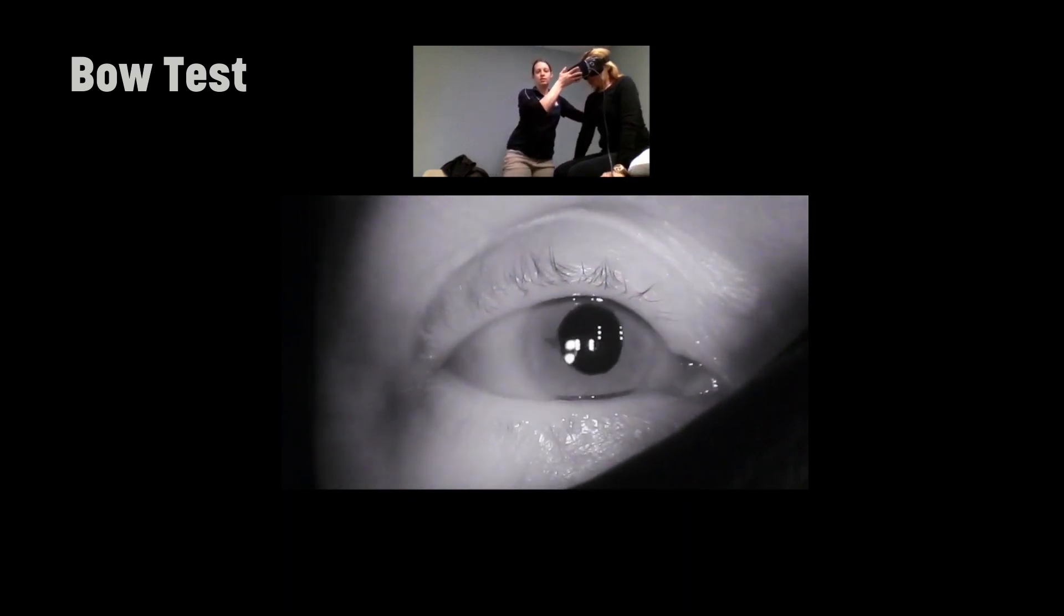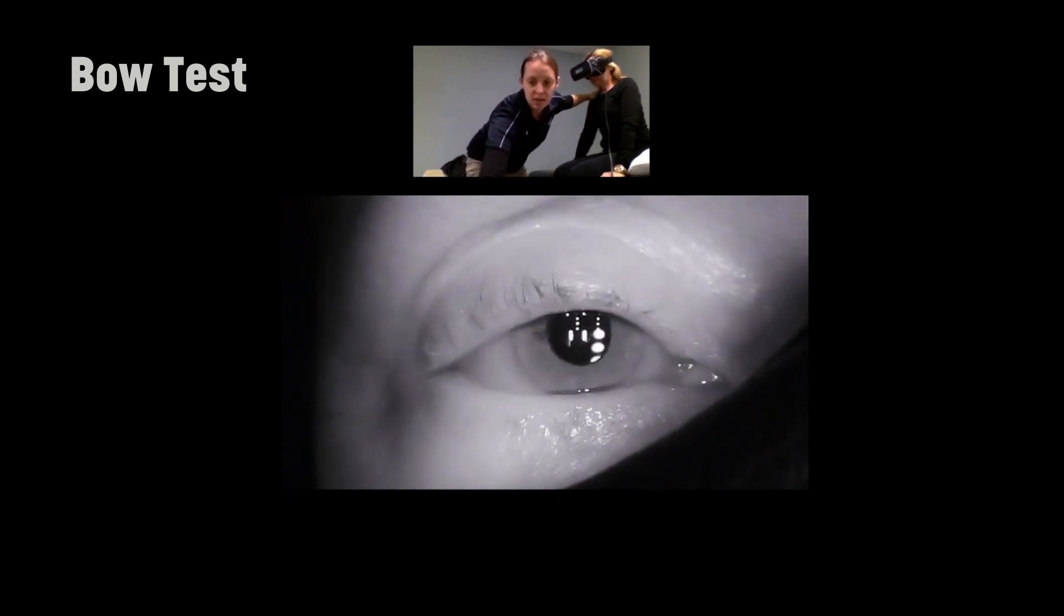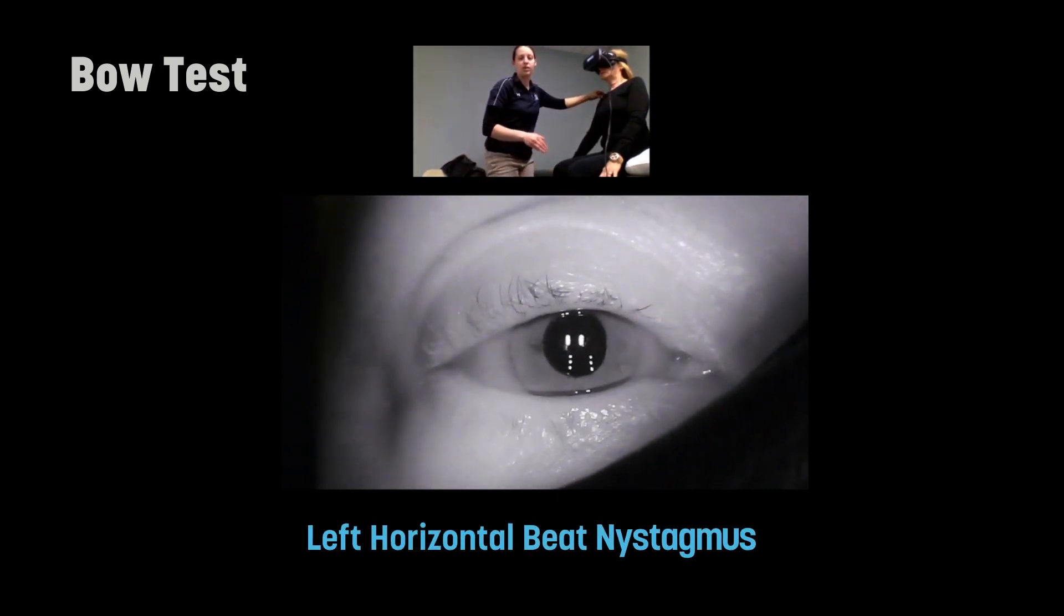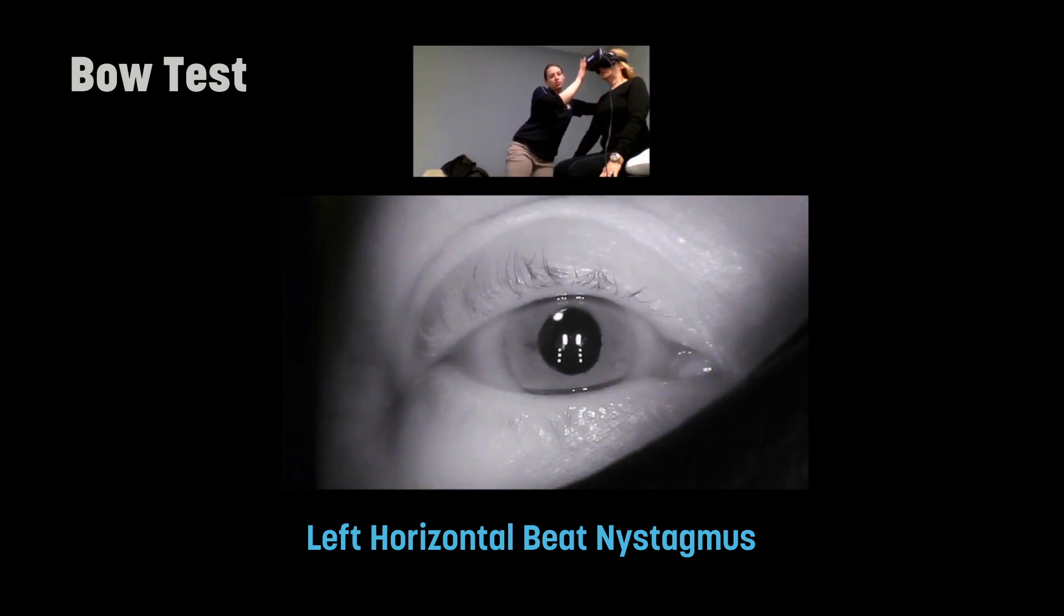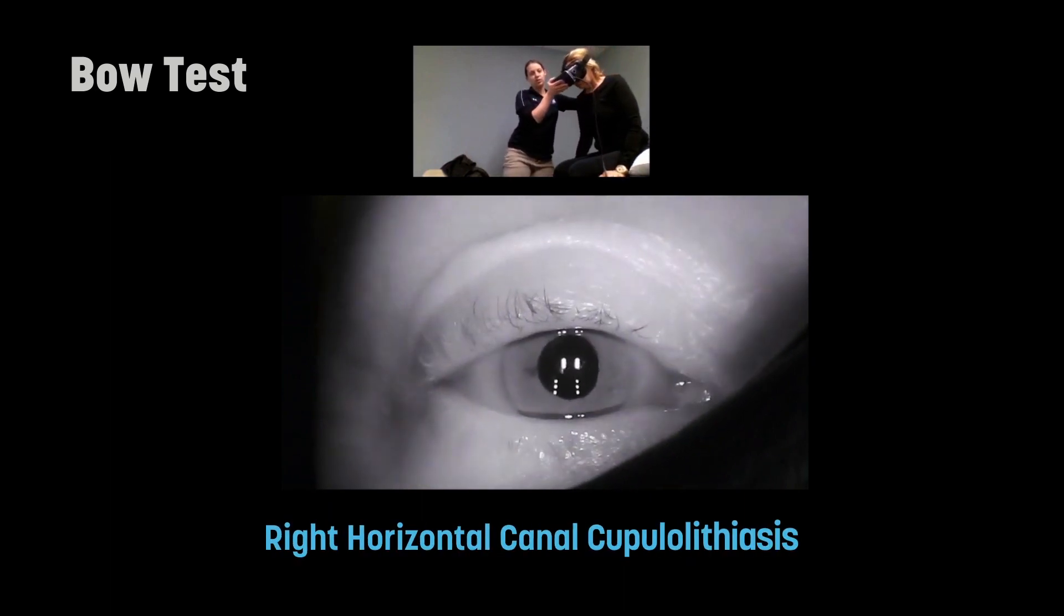You can see that in this bow test, as expected, the patient has a brisk left horizontal nystagmus, which is beating away from the affected side for the patient who has a right horizontal canal cupulolithiasis.